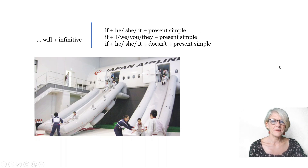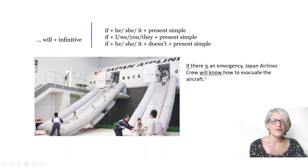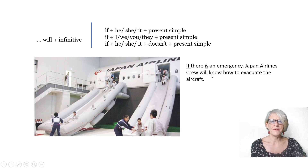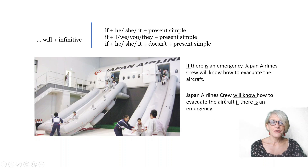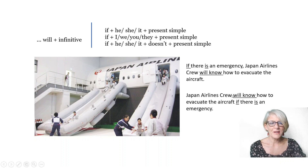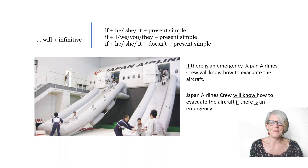Let's see some examples. If there is an emergency, Japan Airlines crew will know how to evacuate the aircraft. So we have 'if' and present simple, then the second clause 'will know' — the future simple. We can also do it the other way around: Japan Airlines crew will know how to evacuate the aircraft if there is an emergency. Note that when the will clause comes first, there is no comma.